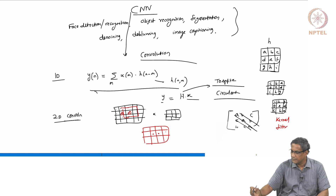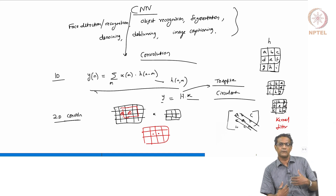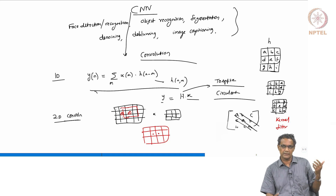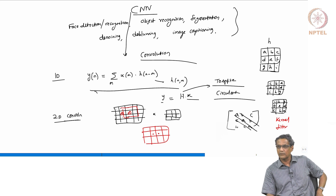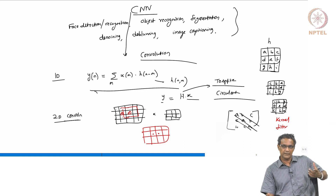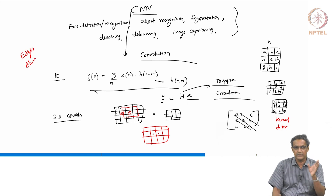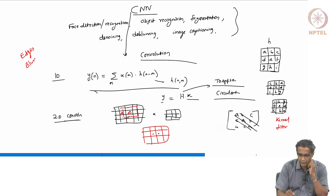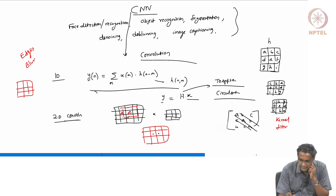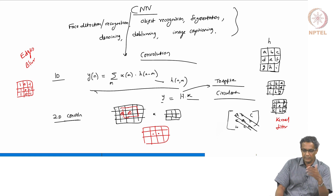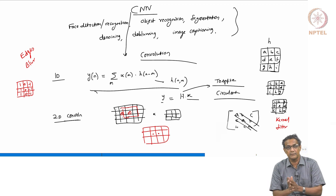Such convolutions — why would you even want to convolve something with an image? What would you get? One thing is you can get edges out of an image with a gradient kind of filter. You can also blur an image — each requires a different kind of kernel. For example, if you want an edge, you can think of a simple filter like [1,1,1; -1,-1,-1; -1,0,-1; 0,0,0] — something like this will give you an x-gradient. Then you can have a y-gradient as well. If you want to look at edges in an image, you may use something like this.